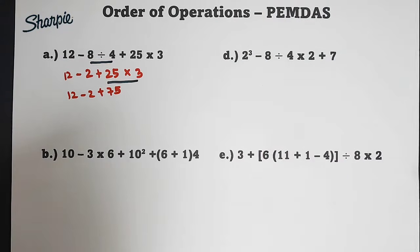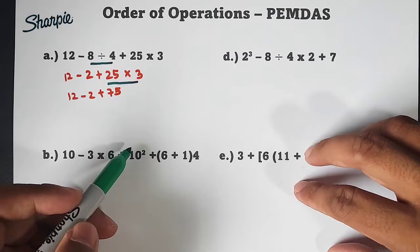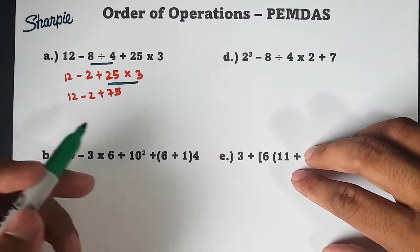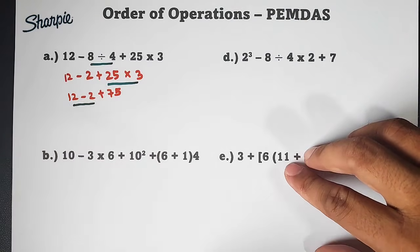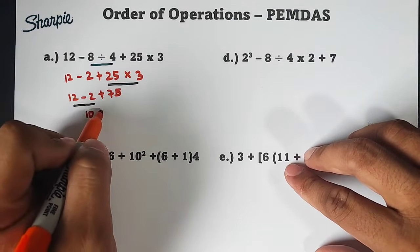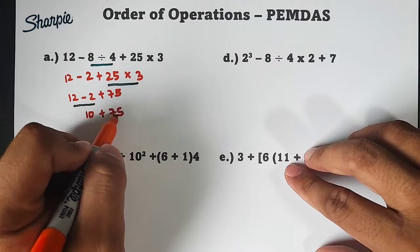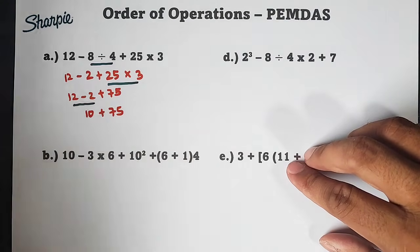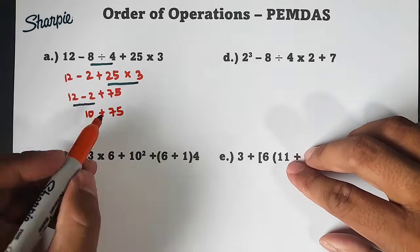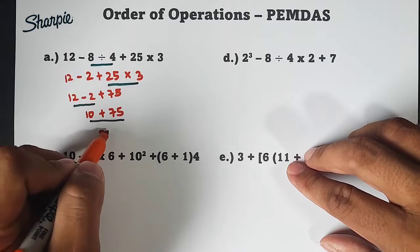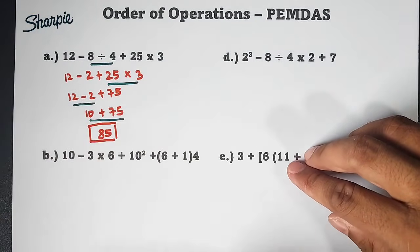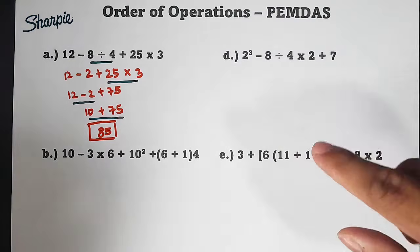Sir, if multiplication and division can interchange, can addition and subtraction also? Yes. It depends on who's on the left side. Here, subtraction comes first. So we will subtract 12 and 2. And that is 10 plus 75. And lastly, we will add 10 and 75. This is 85. And this is the final answer for letter A. Now let's move on with letter D.